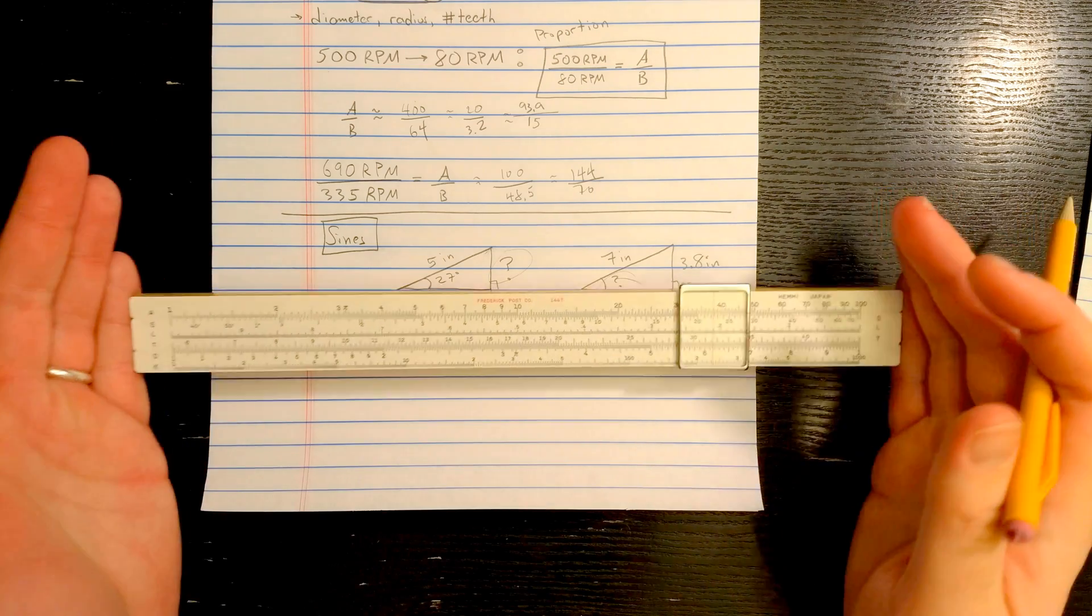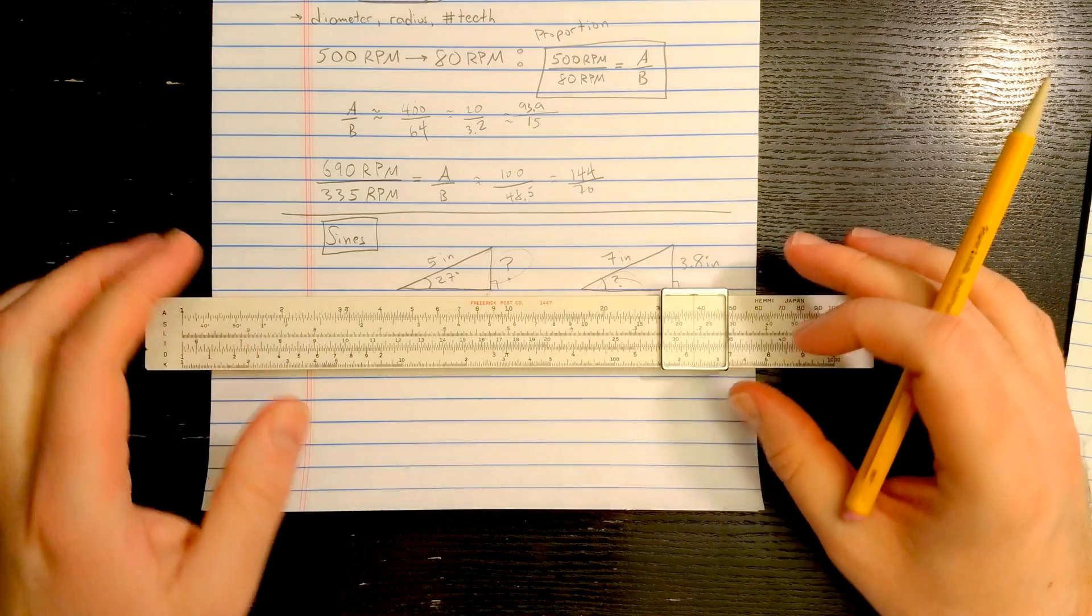Okay, but a lot of simple slide rules, this one, the K and E have a setup like this, so let's use this.